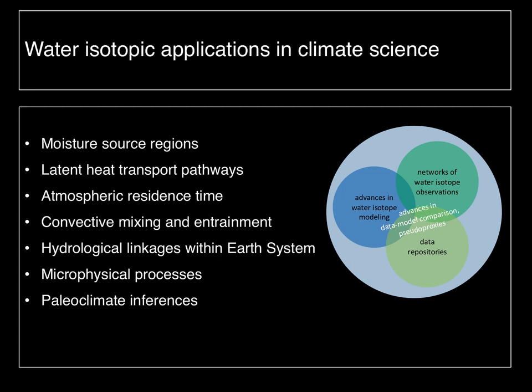I want to add another dimension: there are some relatively comprehensive satellite remote sensing datasets as well, which represent a different axis of available observing. There is quite good remote sensing support for measuring isotope ratios in water vapor from space.